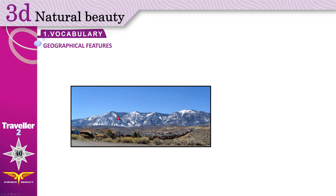Mountain range: an area containing numerous geologically related mountains. This is not one mountain — it's a lot of mountains, but they share the same features, the same minerals, the same rocks. The longest mountain range in the world is called the Andes, and it is seven thousand kilometers long, located in South America. Mountain range.